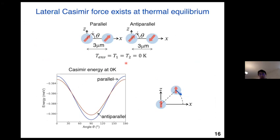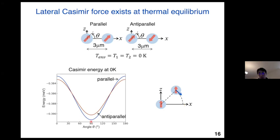The lateral Casimir force can also act even in global thermal equilibrium. We studied the Casimir energy for different orientations of magnetization — both parallel and anti-parallel — at global equilibrium at zero Kelvin. We found that the most stable configuration is when the magnetization is parallel and the direction is perpendicular to the separation direction. This means that even in global thermal equilibrium, the lateral Casimir force will act to push the particle back towards the lowest Casimir energy configuration.